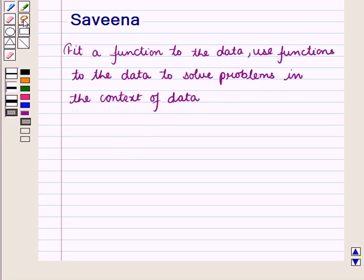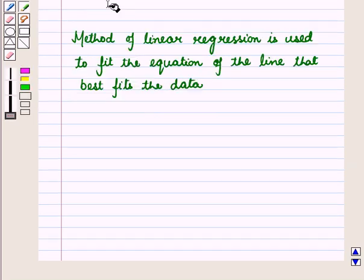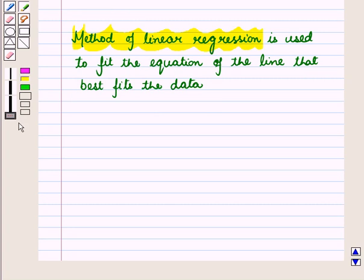In level 2 we discussed about line of best fit by an eye. The problem with a bare fitted line is that it will vary from person to person. So to avoid this problem, the method of linear regression is used to fit the equation of the line that best fits the data.